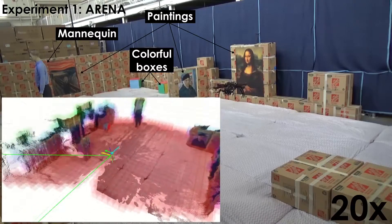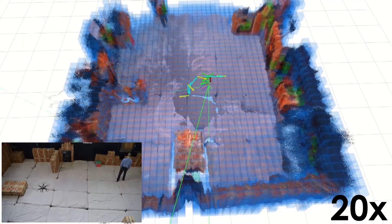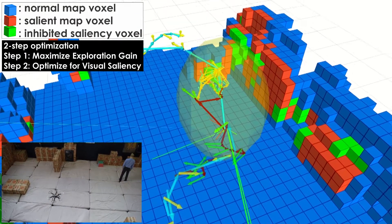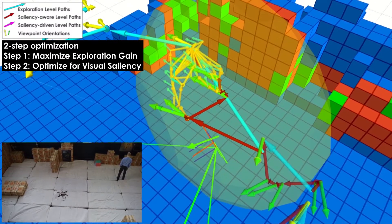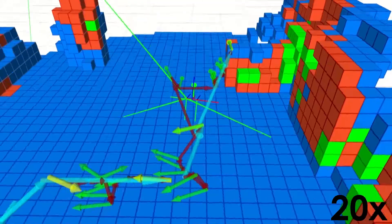In this paper, we present autonomous visual saliency-aware receding horizon exploration using aerial robots. Through a model of visual attention, incrementally built maps are annotated regarding the visual saliency of different objects and entities in the environment.